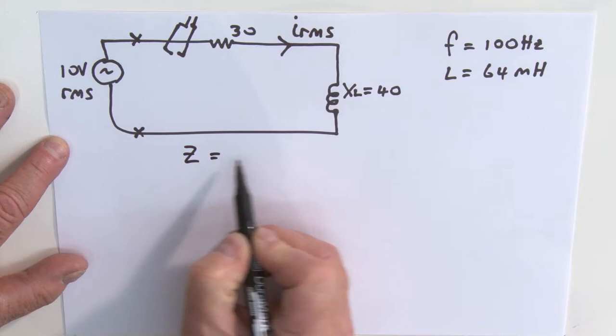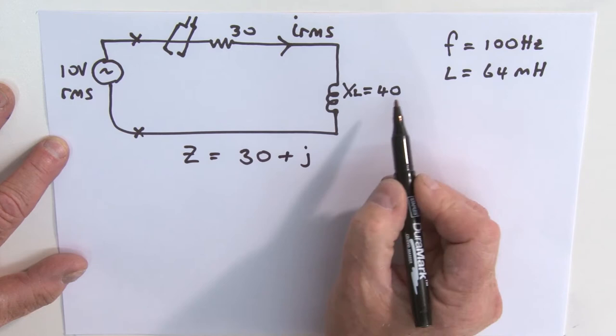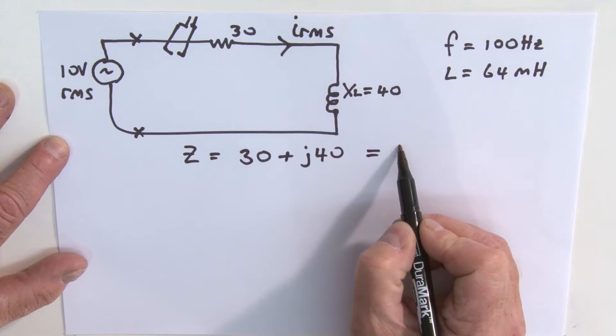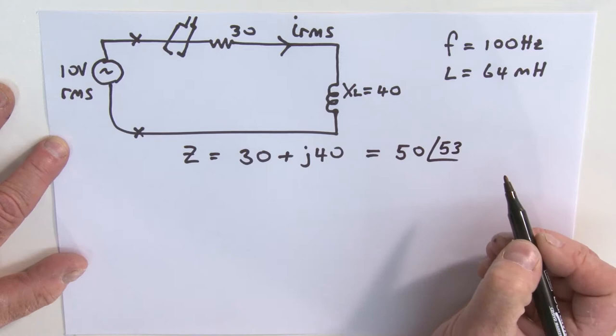Let's first calculate the impedance of this circuit. Z is going to be equal to 30, that's the 30 ohms, plus j times 40. That's a rectangular representation. Let's re-express that in polar form, which would be 50 at an angle of 53 degrees.